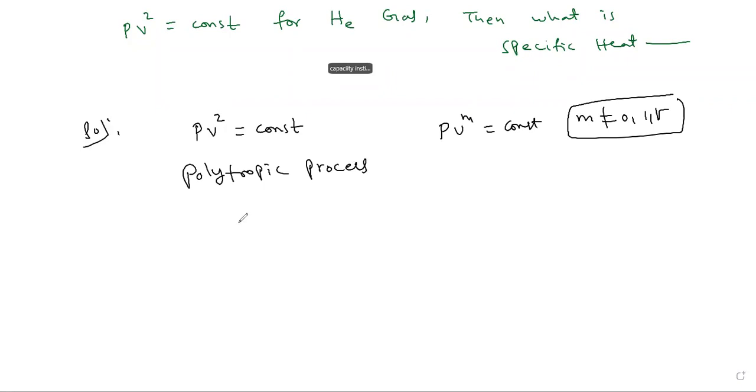The specific heat formula is C equals R over gamma minus 1 plus R over 1 minus m. Since PV^m is constant, we can compare and see m equals 2.